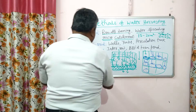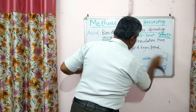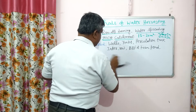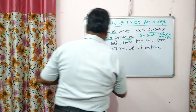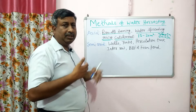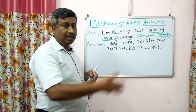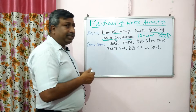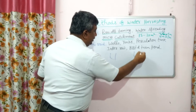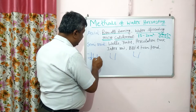In semi-arid regions, rainfall is more than in arid regions, so the volume of runoff and the amount of rainfall is greater. That's why we change our method of water harvesting. One important method is the dug well — a dug well is made at a certain location, and whenever water is there, it moves inside and recharges the well water.